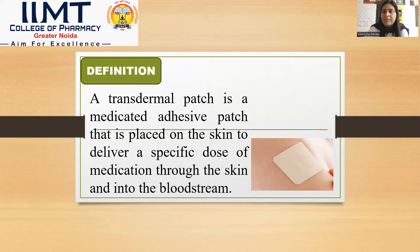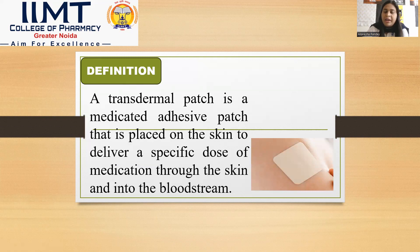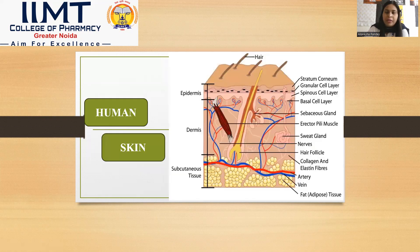First, I would like to introduce what the term transdermal exactly means. A transdermal patch is a medicated adhesive patch that is placed on the skin to deliver a specific dose of a medication through the skin. It is a kind of patch that has medication placed on it and through the skin it delivers the drug into the bloodstream. This is the human skin here — we place the patch and through the skin it is delivered to the bloodstream.